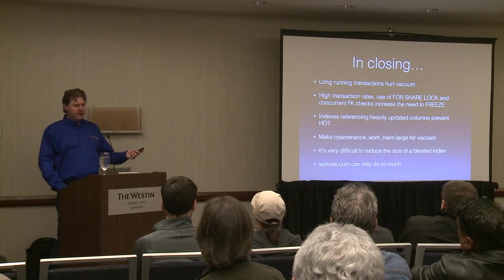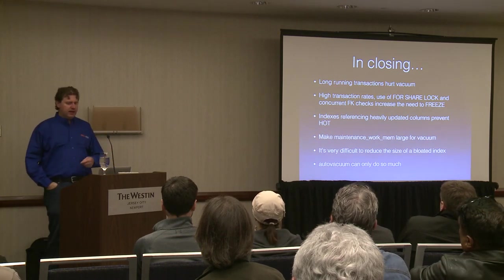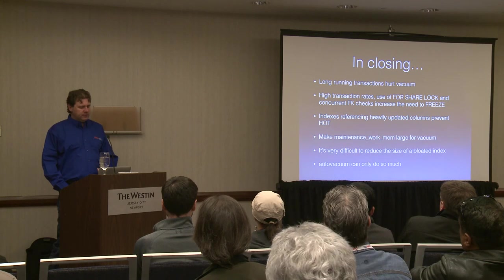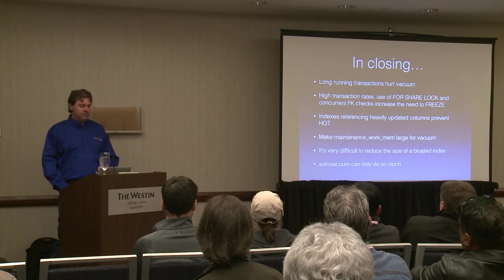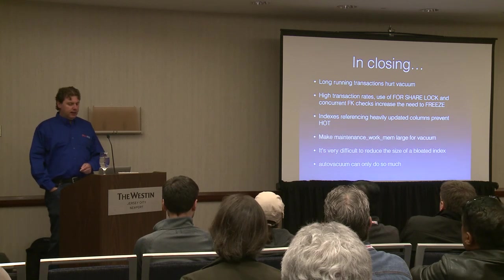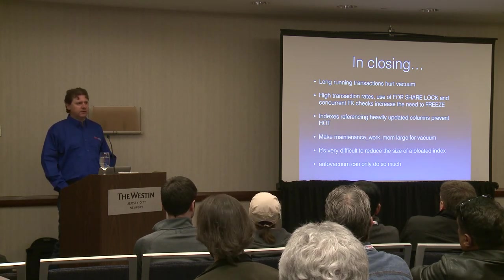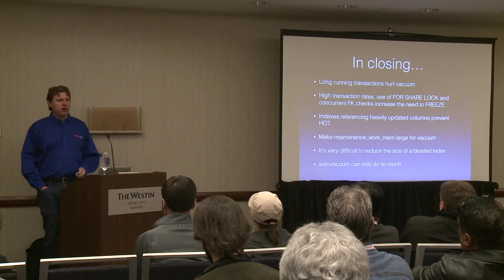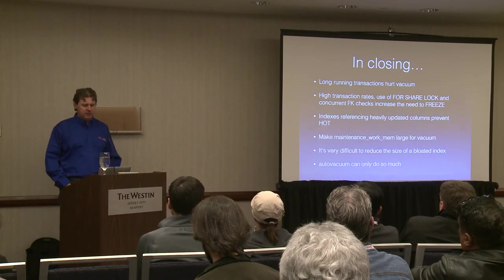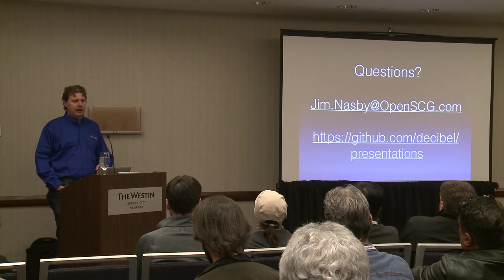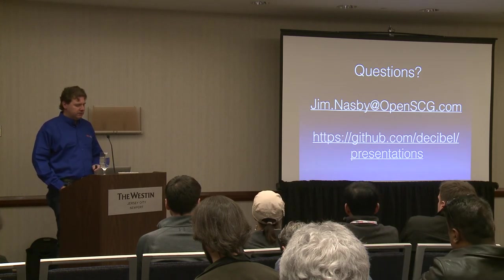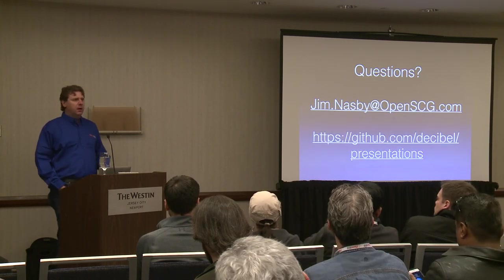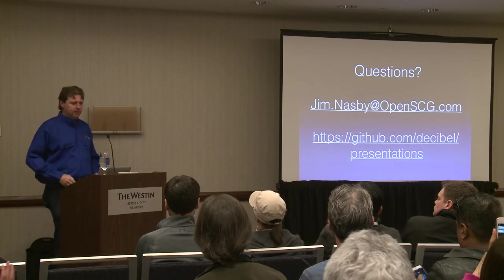In closing: long running transactions hurt vacuum; high transaction rates accelerate the need to do freezing. Try to avoid referencing indexes on heavily-updated columns so you can benefit from HOT. Make sure maintenance_work_mem is large enough. Reducing a bloated index is next to impossible, so just don't let them get bloated. Auto vacuum can only do so much — you really want to give it a hand with some strategic manual vacuums. My GitHub repository has all my presentations; this one is just called vacuum. Thank you.